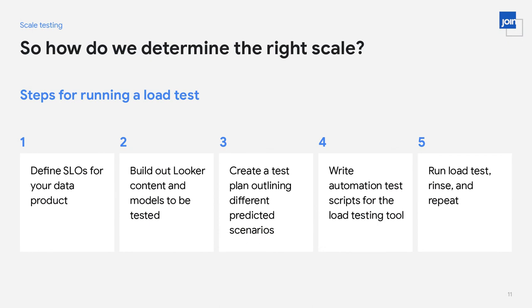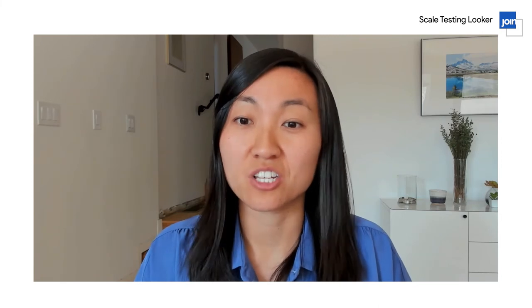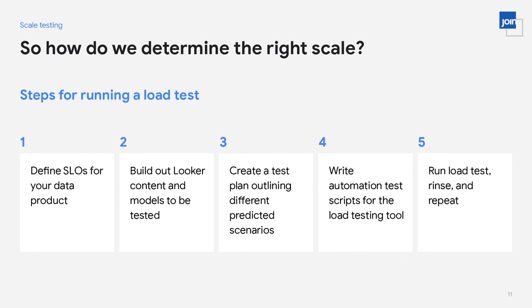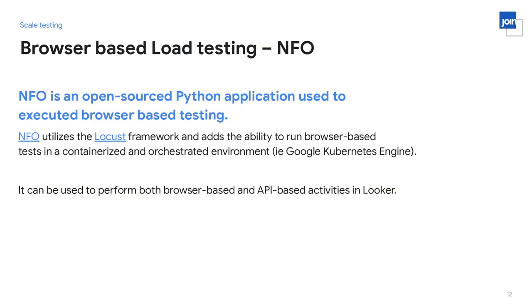In step four, we write our automation test scripts for the load testing tool. These scripts are intended to mimic the activity that a real user would perform in your application, written in the same sequence. And finally, in step five, we run our load tests in several iterations and make customizations to our Looker infrastructure to improve performance.